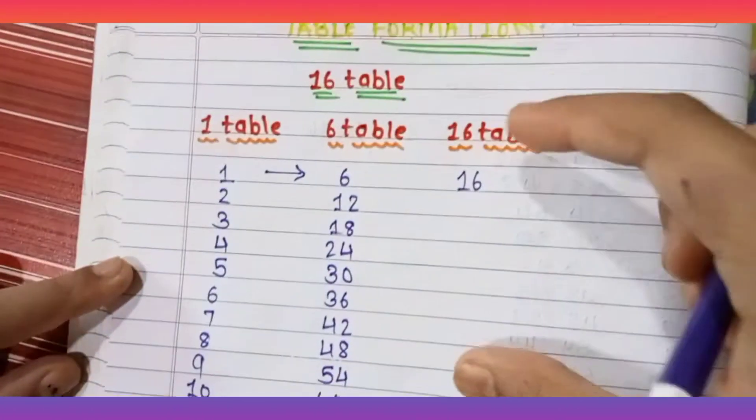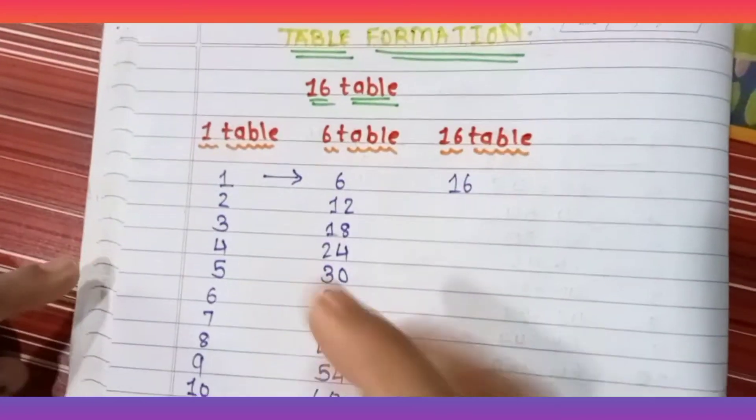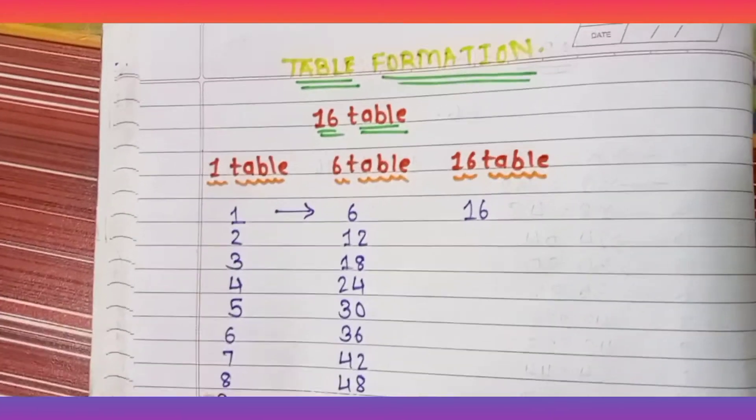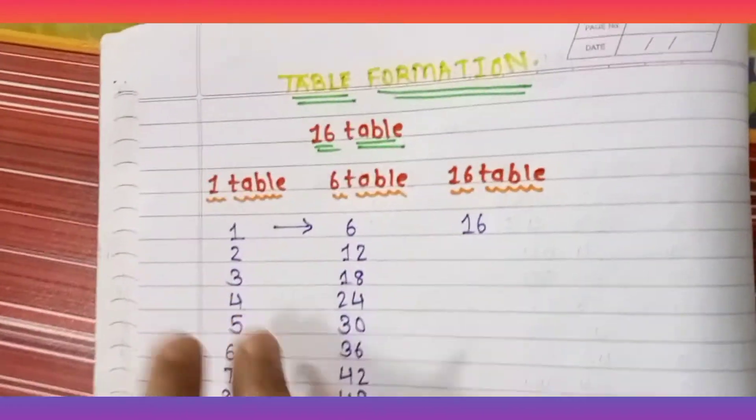You have to form the table. Otherwise, if you're taking another number like 72 or 78, if you understand this easy table, then you can make tables up to hundreds. It's too easy.